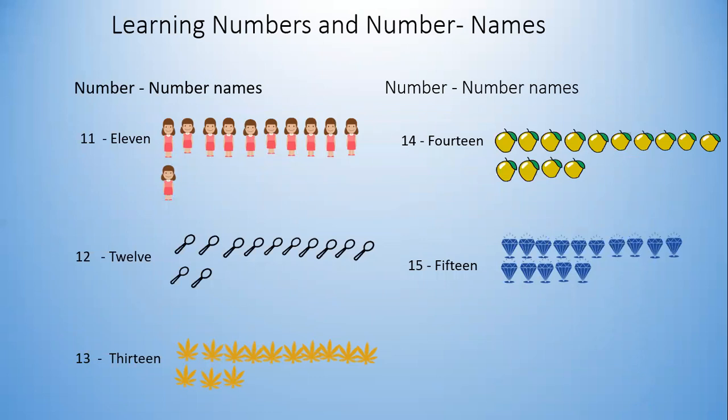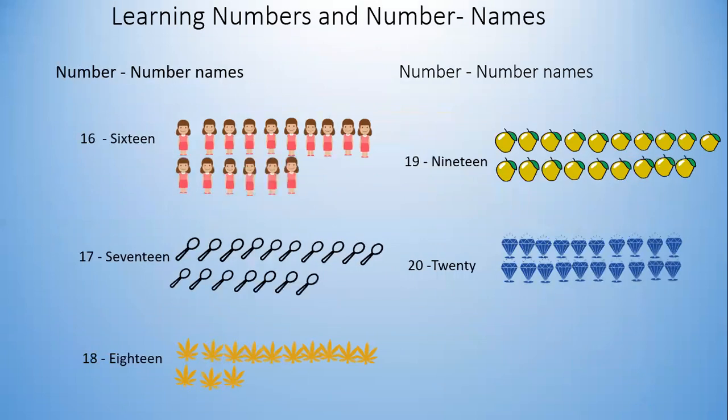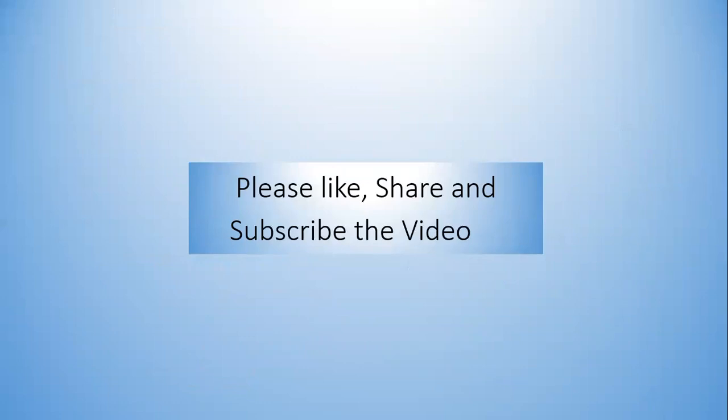So today we learned the numbers from 11 to 20. Let's see it once again. 11 dolls, 12 spoons, 13 flowers, 14 mangoes, 15 diamonds, 16 dolls, 17 spoons, 18 flowers, 19 mangoes, 20 diamonds — lots of diamonds! Hope you enjoyed this video. Please like, share and subscribe. Thanks for watching.